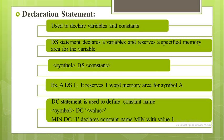The second type of statement is called declaration statement. These statements are used to declare variables and constants. The DS statement declares a variable and reserves a specified memory area for the symbol. The format is: symbol DS constant. For example, A DS 1 reserves one word of memory area for the symbol A.